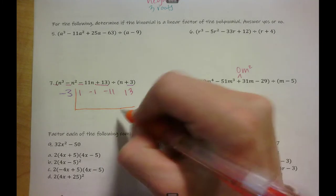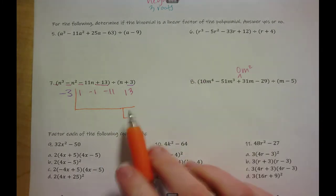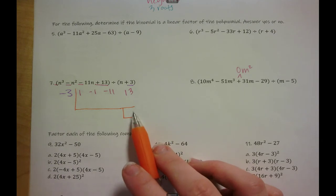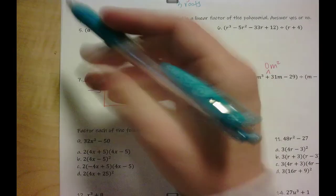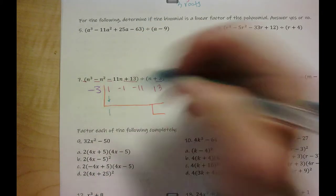All right, so we are looking for this last number right here if there's a number here or not. So let's go through our steps. We drop down this first number one.